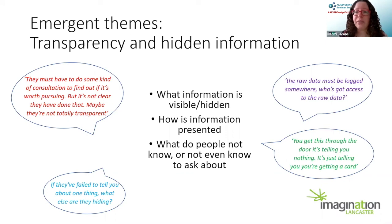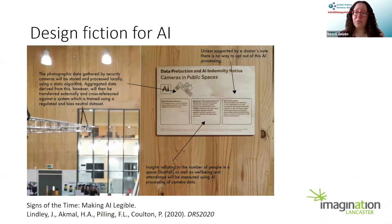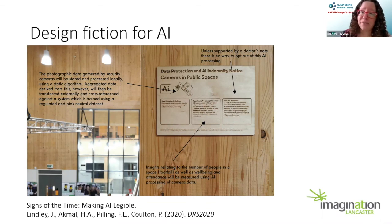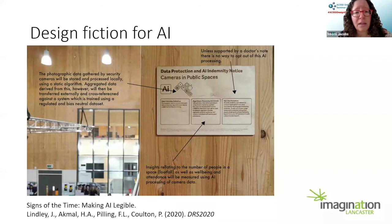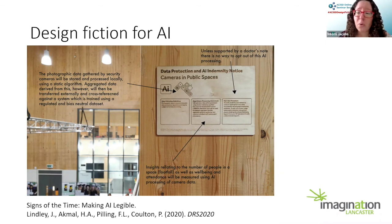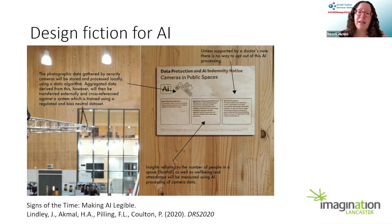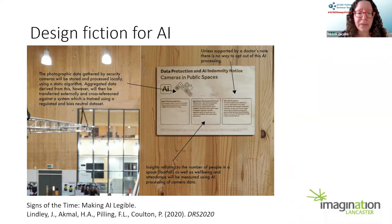I'm now going to give a few early examples of how we might think about this in the context of AI. This is an image from a paper being presented at the DRS conference in a couple of weeks. It shows design fiction signposts installed in our building in LICA in Lancaster — signs about the use of AI in the building. One is an indemnity notice saying that if you come into this space, AI will be used to analyze you and you're giving consent by entering — there's no way to opt out, though it mentions using a doctor's note. It talks about using AI to analyze footfall using camera processing, looking at attendance and well-being.